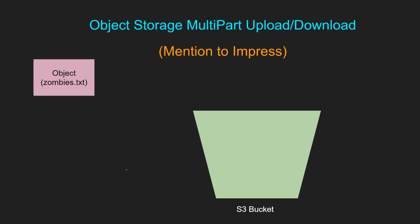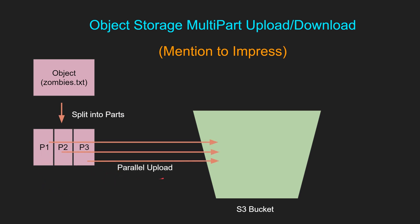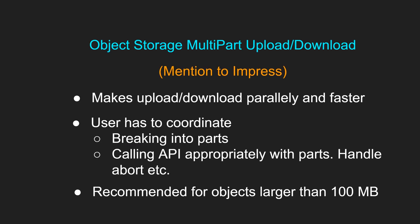However, one thing to mention is S3 multi-part upload and download — you can mention this to impress your interviewer. Multi-part upload allows you to upload a single object as a set of parts. Basically, this one object you can split into parts — part one, part two, part three — and each of these parts can be parallelly uploaded. Similarly, while downloading, you can break this object into three different parts and parallelly download it. This makes upload and download faster. However, you have to coordinate the breaking into parts, call the API appropriately, and handle aborts in case something goes wrong. This is recommended for objects larger than 100 megabytes.